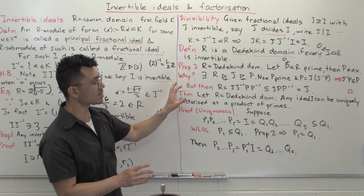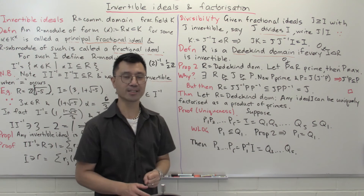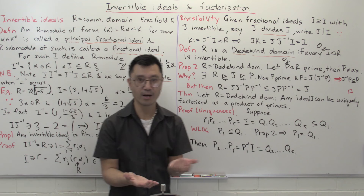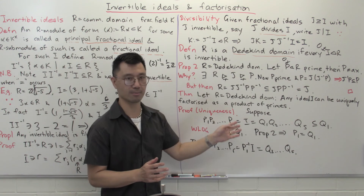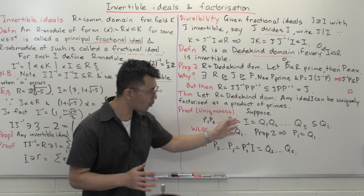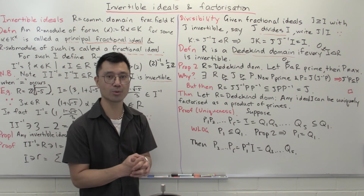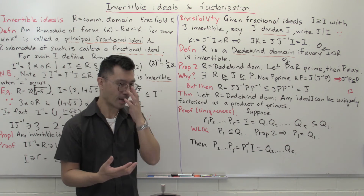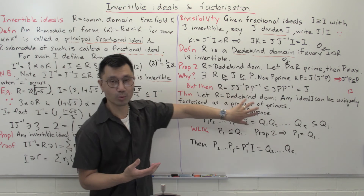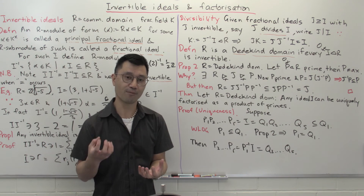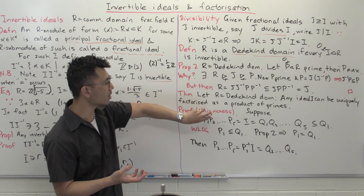If every non-zero ideal is invertible — that is, if we have a Dedekind domain — then we know that primes have to be either zero or the maximals. The most important theorem, which I won't prove today, is that if R is a Dedekind domain, any ideal I can be uniquely factorized into a product of primes. The part that's easiest to prove, which I will do, is the uniqueness. The existence I'll do in the next video, because it most naturally introduces a new concept: the ascending chain condition. For the uniqueness, we can copy the proof we saw for unique factorization of integers into primes.